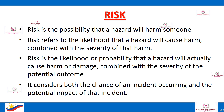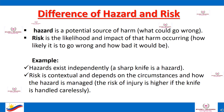Risk is the possibility that a hazard will harm someone — the likelihood that a hazard will cause harm, combined with the severity of that harm. It considers both the chance of an incident occurring and the potential impact. The difference between hazard and risk: a hazard is a potential source of harm, while risk is the likelihood and impact of that harm occurring. For example, a sharp knife is a hazard; the risk of injury is higher if the knife is handled carelessly.